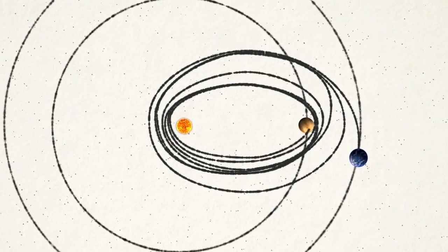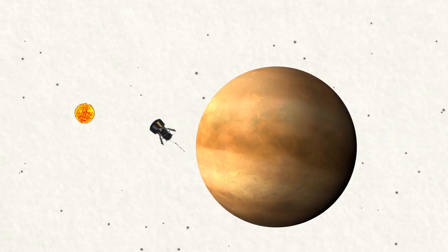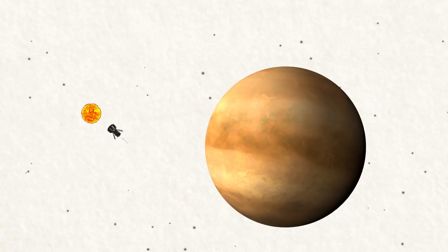In this case, rather than speeding up the spacecraft, as in a typical gravity assist, Venus slows down its sideways motion, so the spacecraft can get close to the Sun.